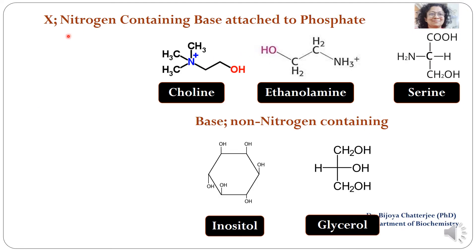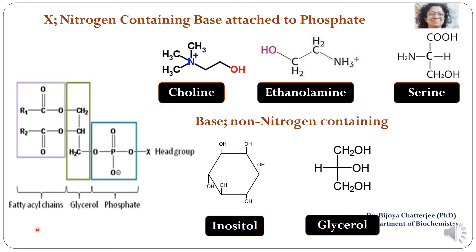Now we come to the X groups. First let us see the basic structure of a phospholipid. This is a phospholipid which contains glycerol, and as you can see, the hydroxy groups on the first carbon and second carbon are esterified with fatty acids — this is the first fatty acid and this is the second fatty acid. On the third carbon is attached the phosphate group, making it a phospholipid. The variation will come at the X position, which will contain nitrogen-containing or non-nitrogen-containing bases attached to the phosphate. First let us look at the nitrogen-containing bases attached to the phosphate at the X position.